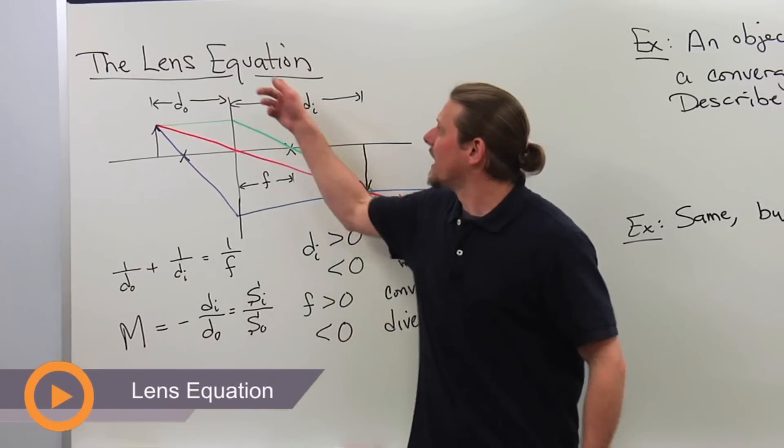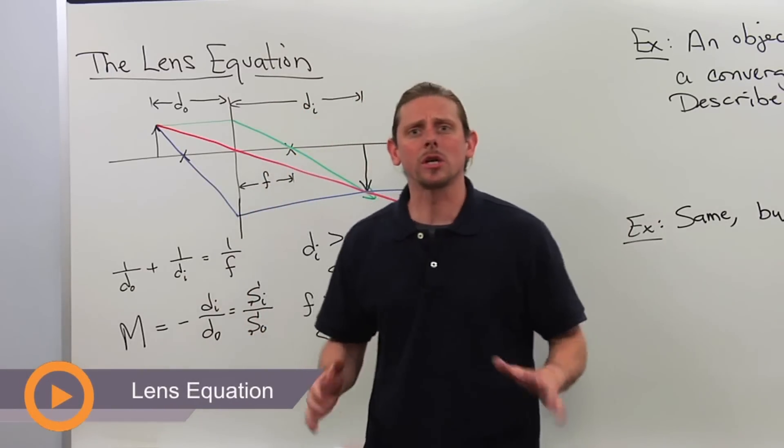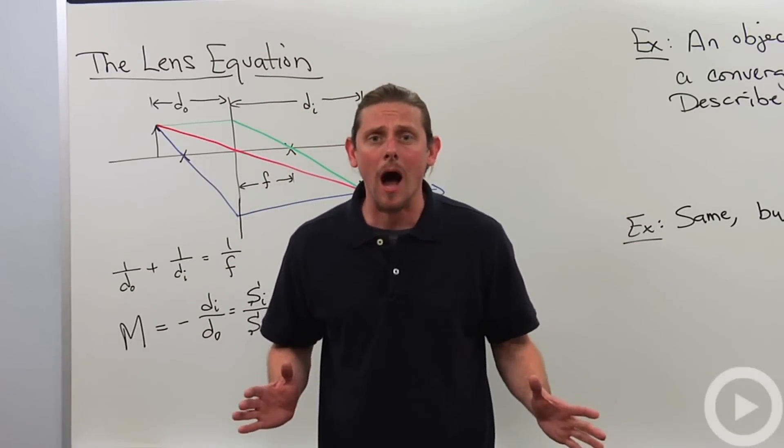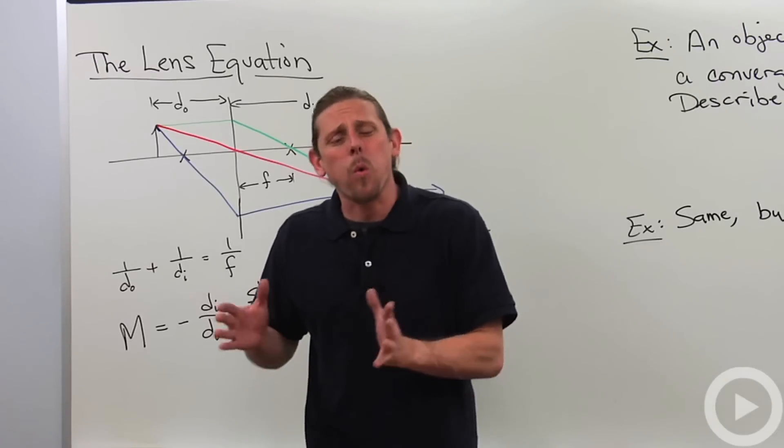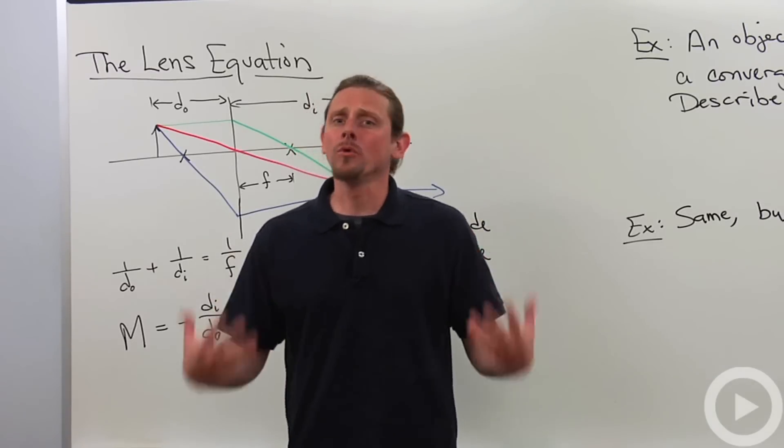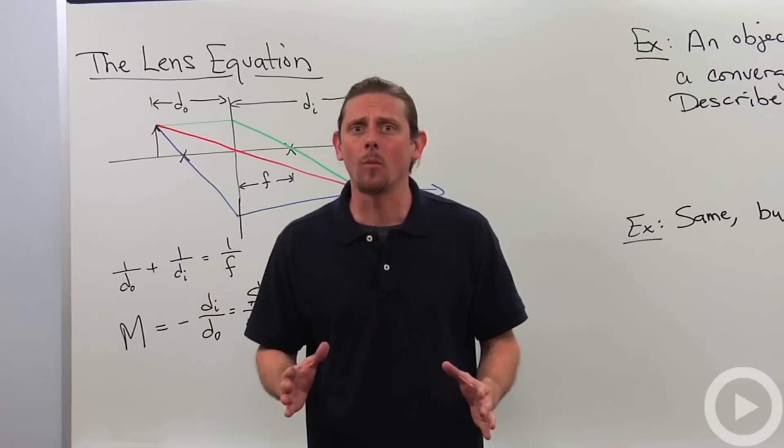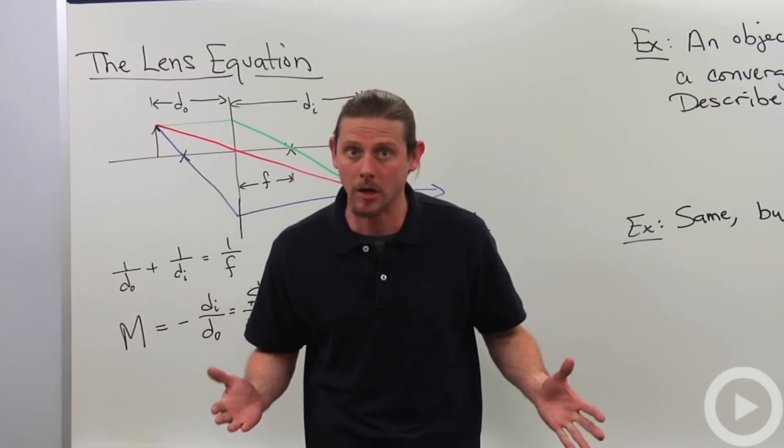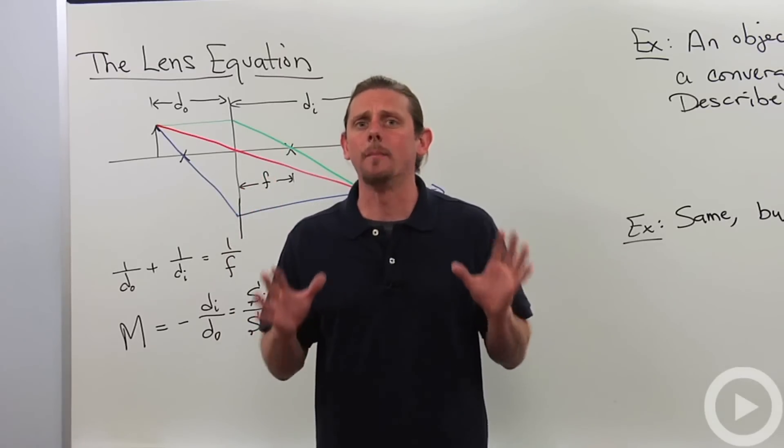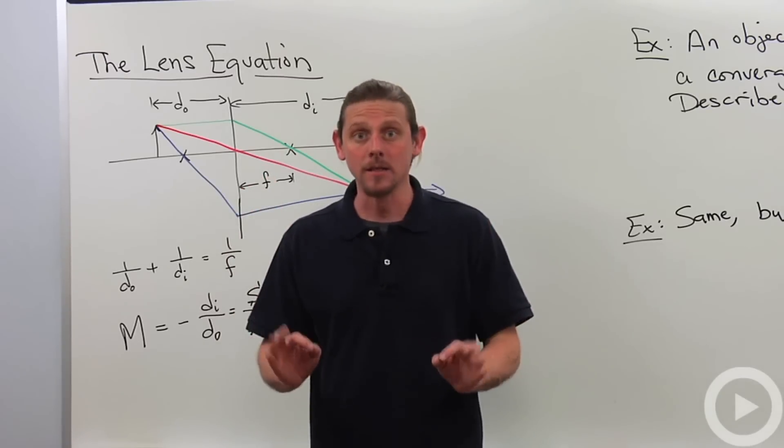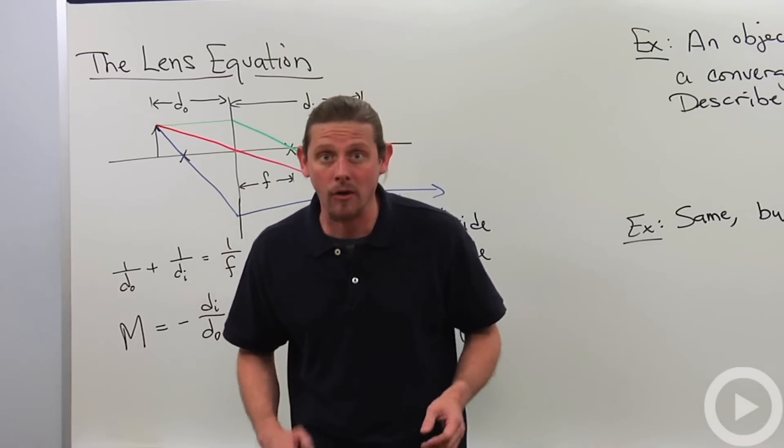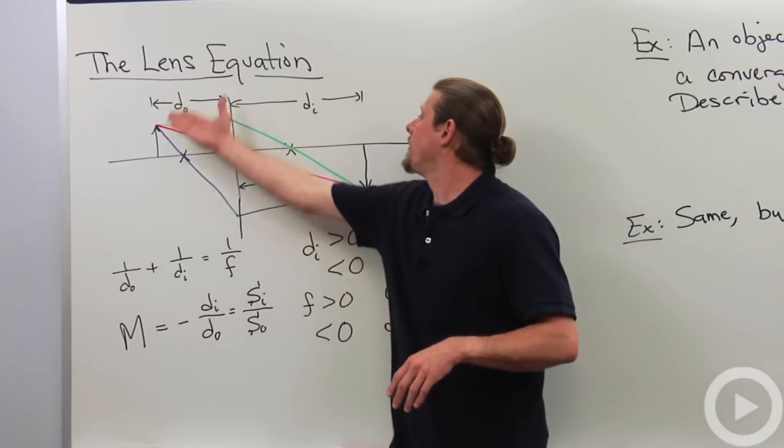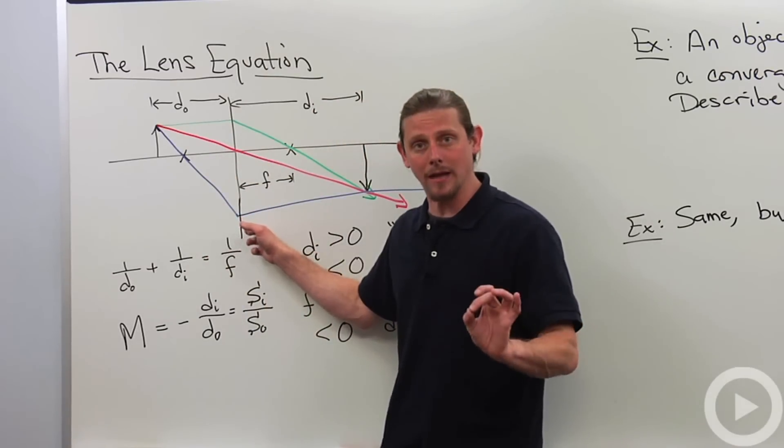So let's talk about the lens equation. The lens equation allows us to do geometric optics, but in a quantitative way. Now, it will turn out that it works exactly the same way for lenses as it does for mirrors, just like geometric optics does. So I'm going to spend most of my time talking about lenses because they're easier to draw the diagrams for.